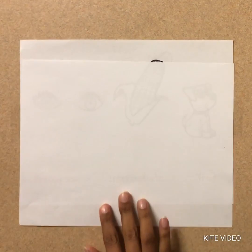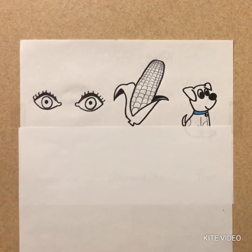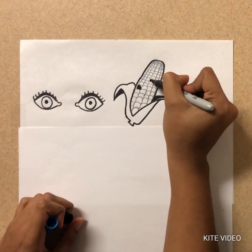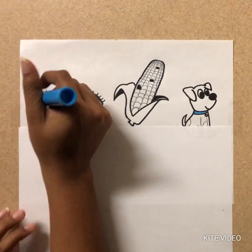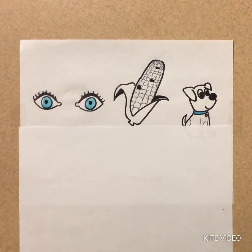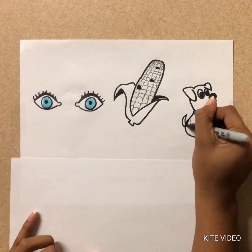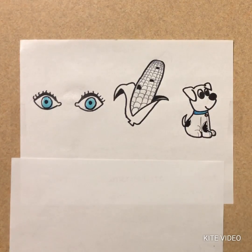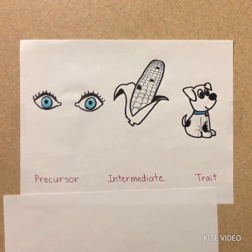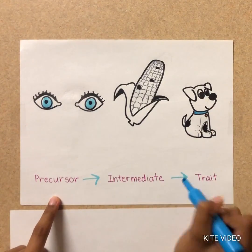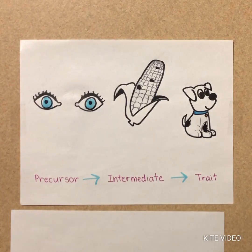Some real-life examples of genetic epistasis include kernel color in corn, eye color in humans, and coat color in certain animals. Genetic epistasis can occur other than in a stepwise progression, but simply describes the relationships between genes.